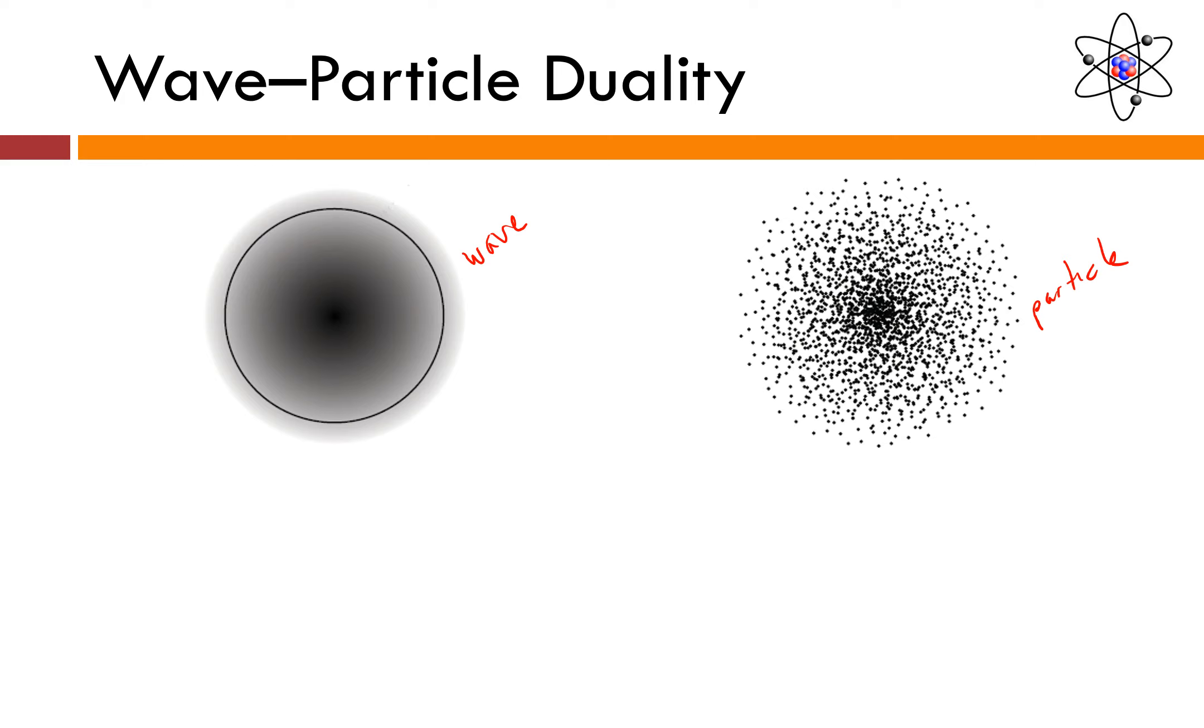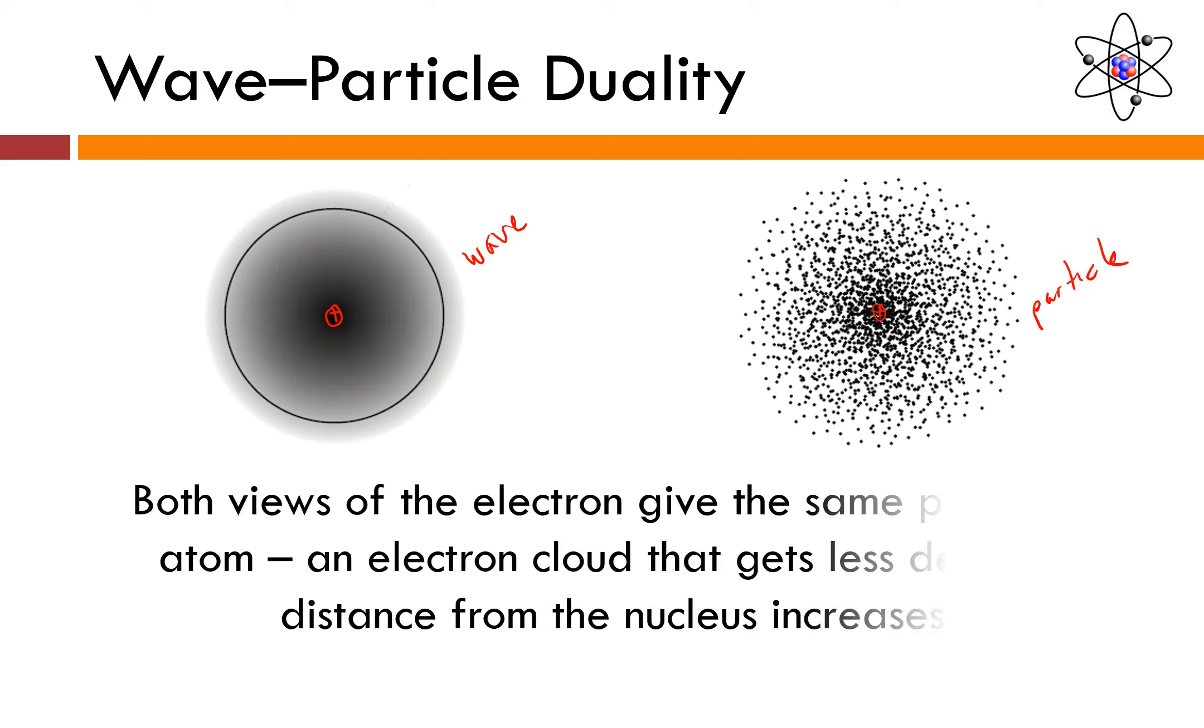In either case, you've got a pretty similar picture of the atom. So, at the center, you've got a nucleus. And then, as you move farther and farther away from the nucleus, this cloud of electrons. Again, whether you look at it in terms of the electron being a wave, or as a particle, gets less and less dense. It is okay to be confused right now. In fact, you've got a lot of company. Scientists at this point in time are also very, very confused.